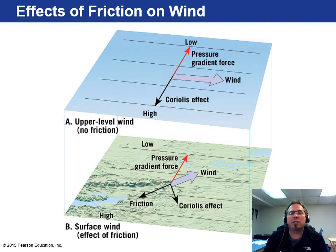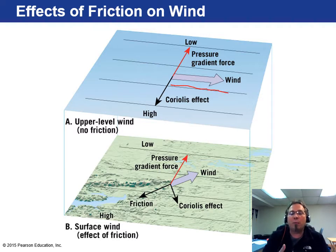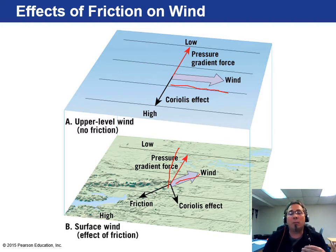Here's what friction does to wind. In the upper atmosphere, with no friction, winds blow parallel to isobars and the pressure gradient. But when ground friction enters the picture, the pressure gradient pushes in one direction while the Coriolis effect tries to deflect it to the right. The result is that winds don't go completely parallel to the isobars the way they do up high — they're deflected, just not as much, because of surface friction.